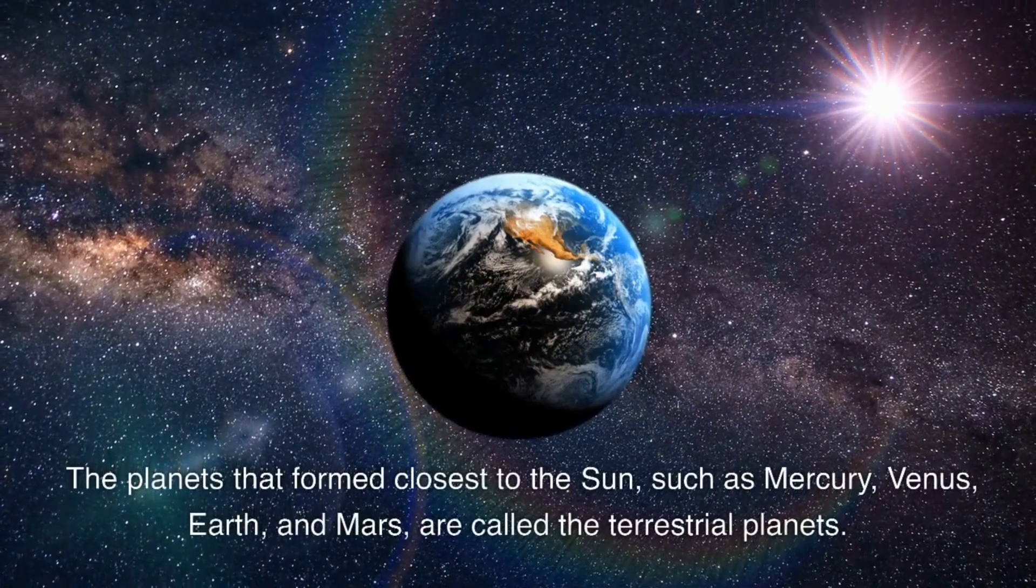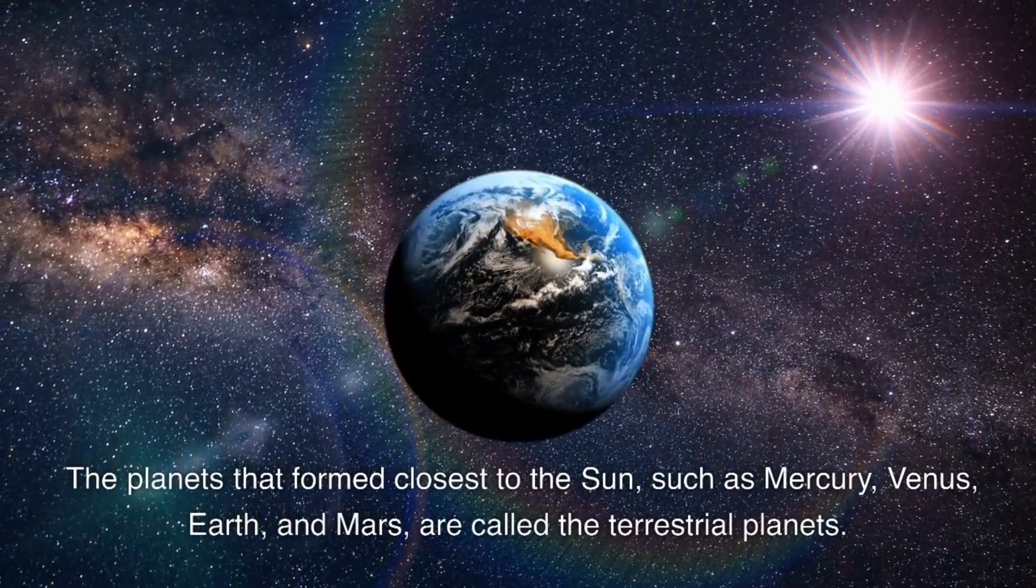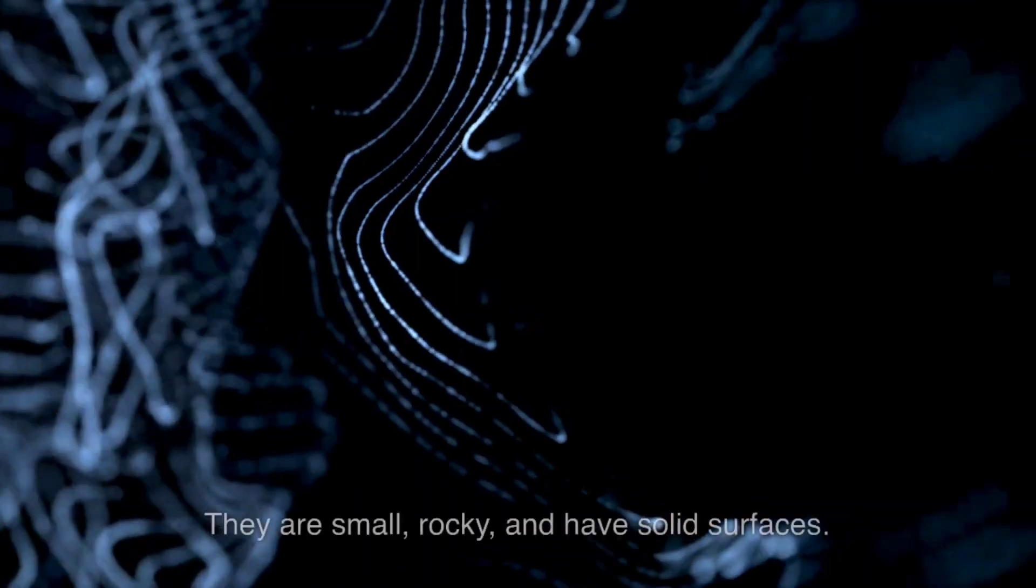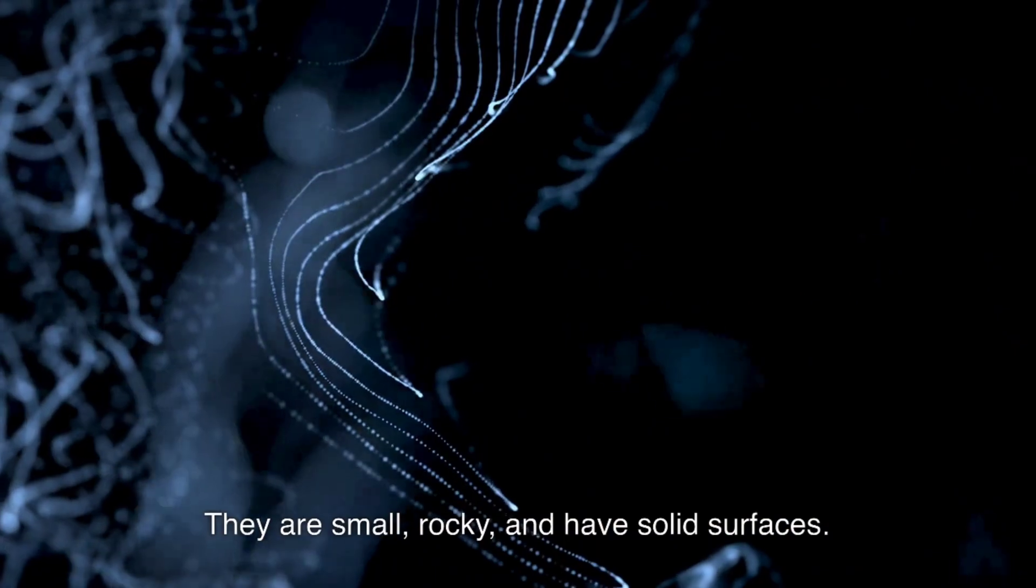The planets that formed closest to the sun, such as Mercury, Venus, Earth, and Mars, are called the terrestrial planets. They are small, rocky, and have solid surfaces.